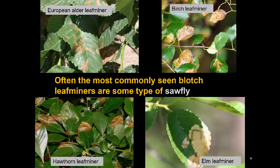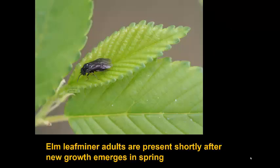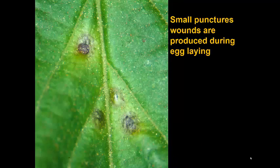Often the most commonly seen blotch leaf miners are some kind of sawfly. The one I have the best pictures of is the elm leaf miner, which makes leaf mines on several kinds of elm. The adults are out very early, shortly after the new leaves emerge. They are a kind of wasp, but a non-stinging wasp. The females then lay eggs, which are generally inserted near the main vein and one of the larger side veins on the upper leaf surface, creating small puncture wounds incidental to egg-laying.